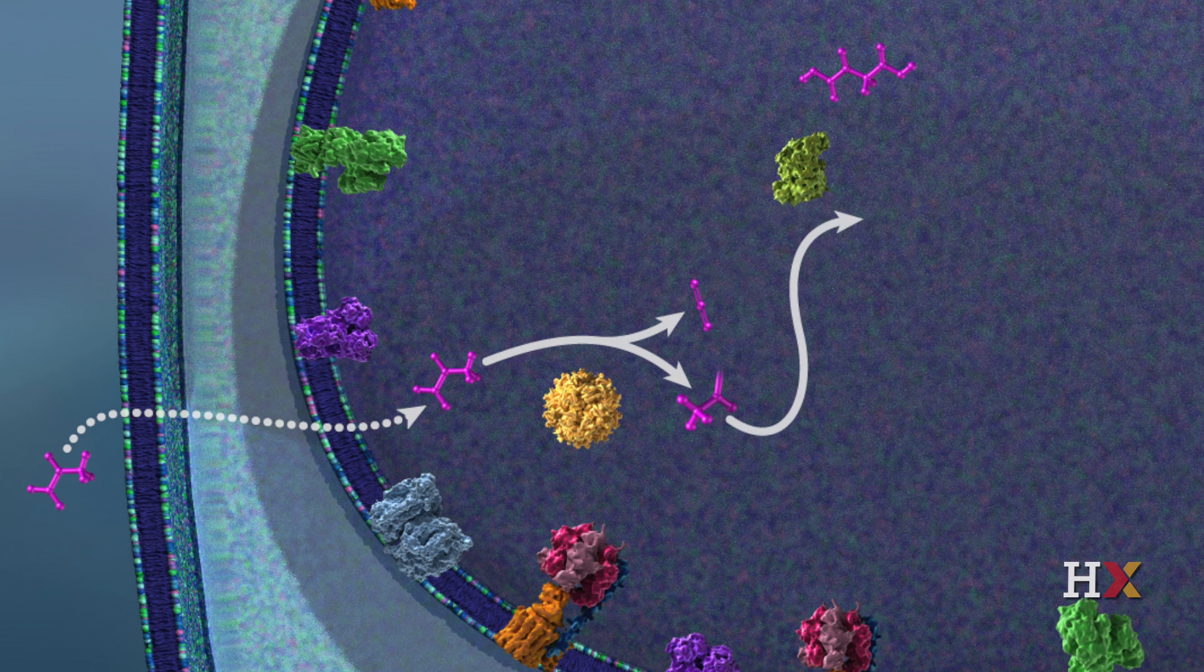In the first step of the citric acid cycle, the enzyme citrate synthase combines the two-carbon acetyl group from acetyl CoA with the four-carbon molecule oxaloacetate. This generates the six-carbon molecule citrate.